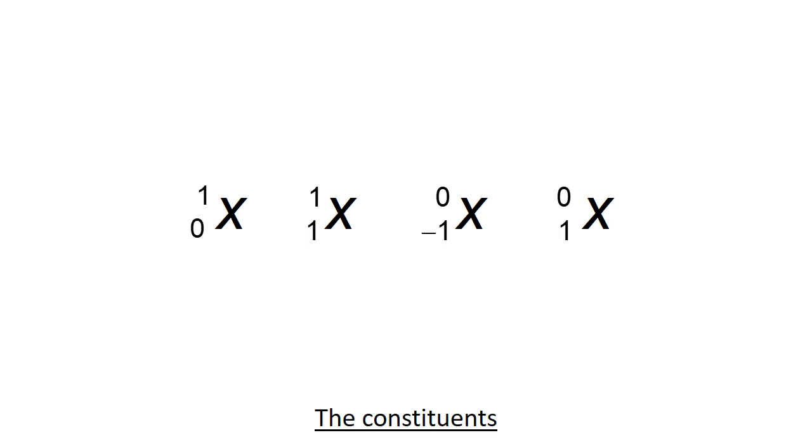And this gives us the building blocks that we need for our matter in H2 physics. So something with zero charge but a mass number of one is a neutron. Mass number one and a charge of one is a proton.